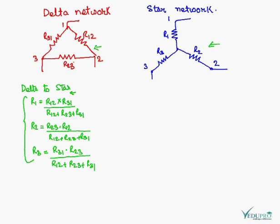R1 will be equal to R12 into R31 upon the summation of all the resistances. R2 will be equal to R23 into R12 divided by summation of all the resistances. R3 will be R31 dot R23 upon the summation of all the resistances.